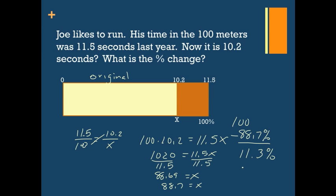So we've had an 11.3% decrease. Obviously, we started at 11.5, we went down. That's now an 11.3% decrease in his time.